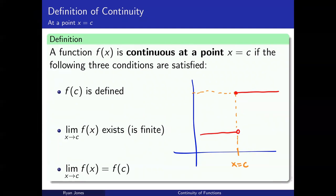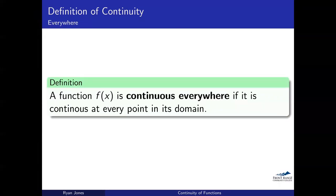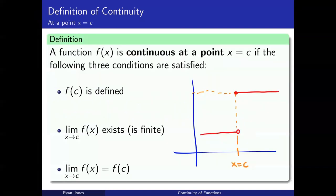This definition is for continuity at a particular point. If we want to talk about an entire function being continuous, we say that function is continuous everywhere, so long as it's continuous at every point in its domain. You have to satisfy these three conditions on every single point. There are an infinite number of points, but we can be smart about it and look at where it's likely not to be continuous.